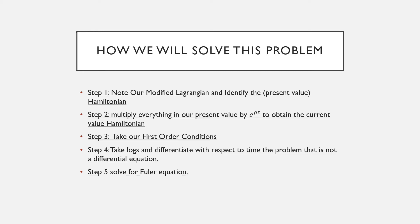Step three is that we're going to take our first order conditions of our current value Hamiltonian. Step four is that we're going to take the logs and differentiate with respect to time the first order condition that is not a differential equation. And step five is that we're going to solve for our Euler equation.